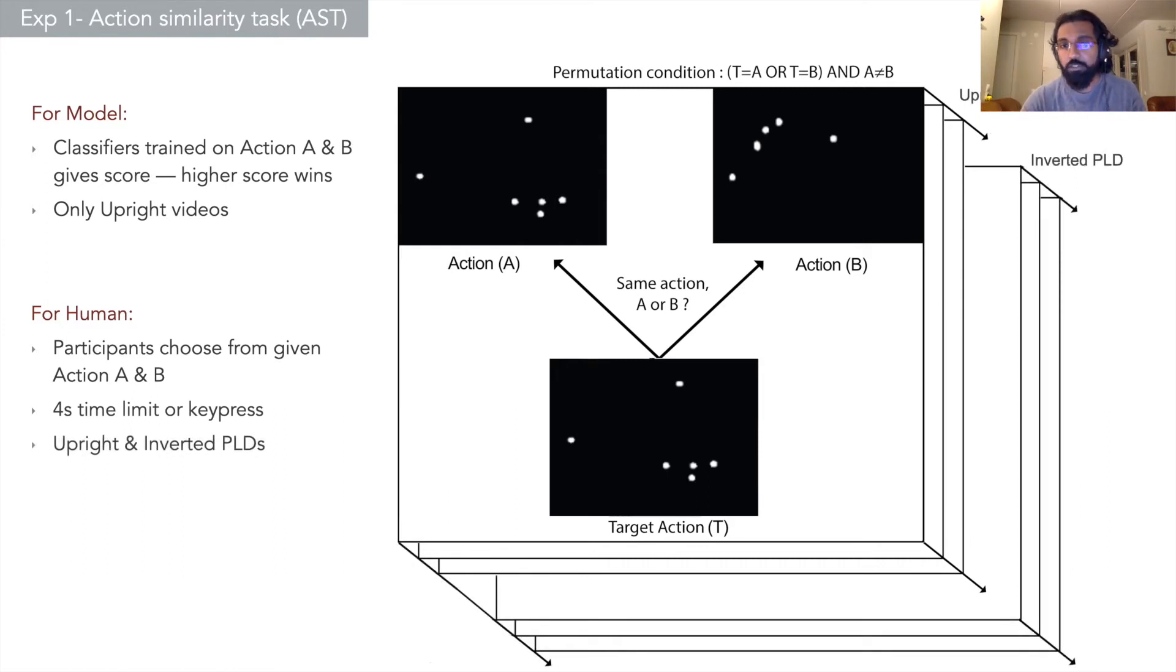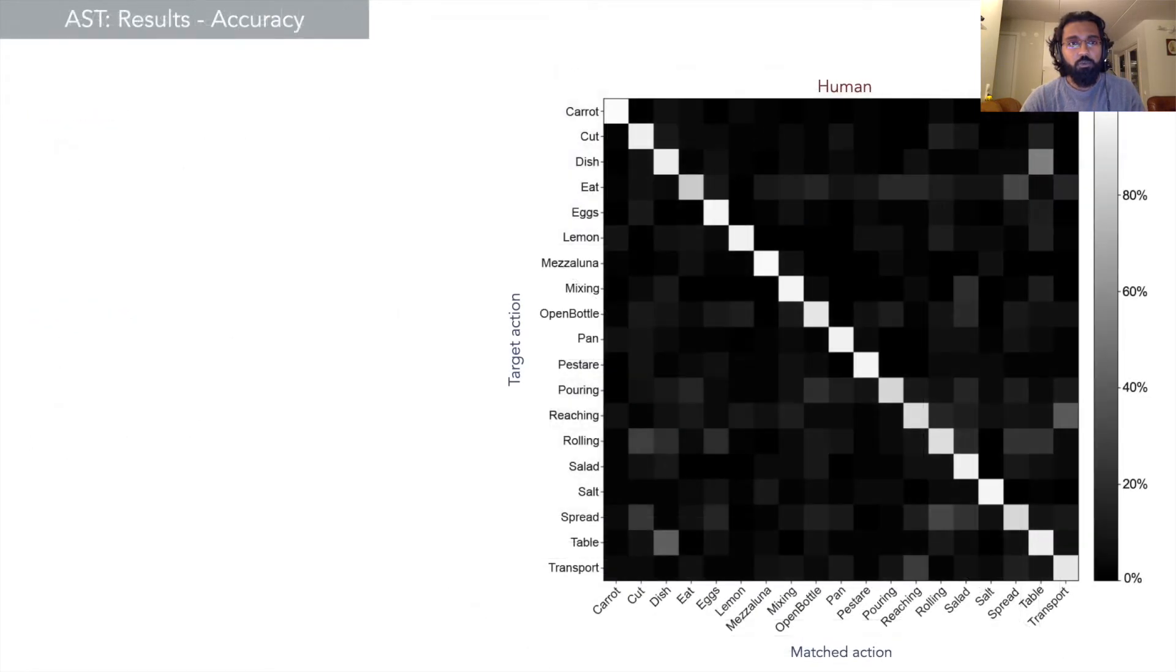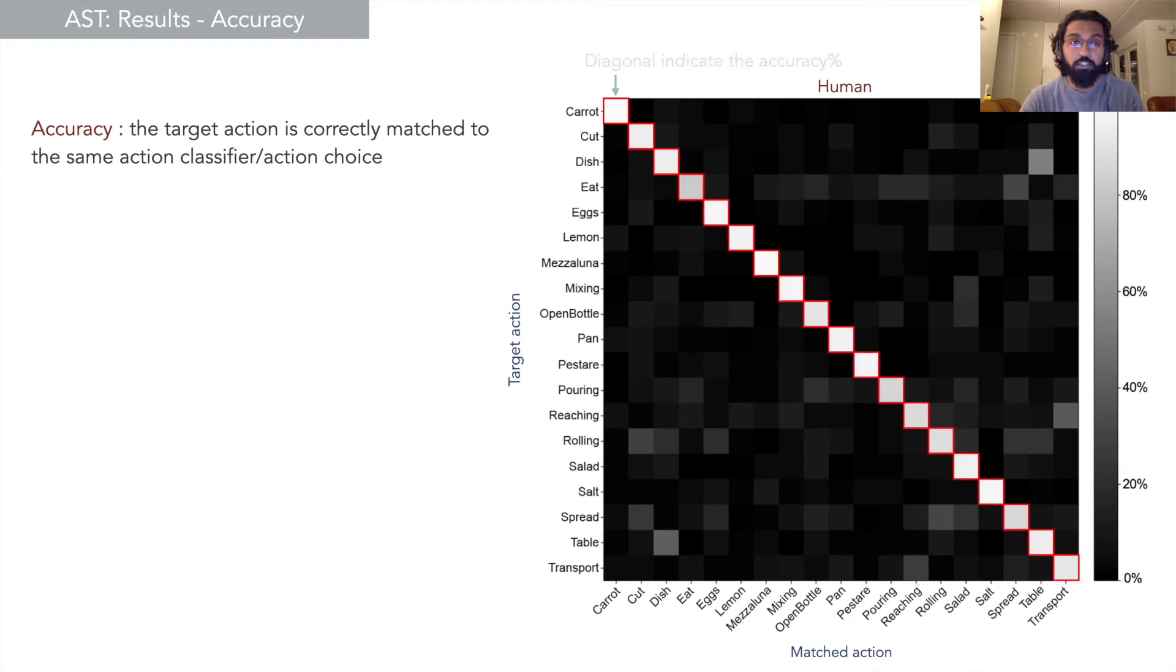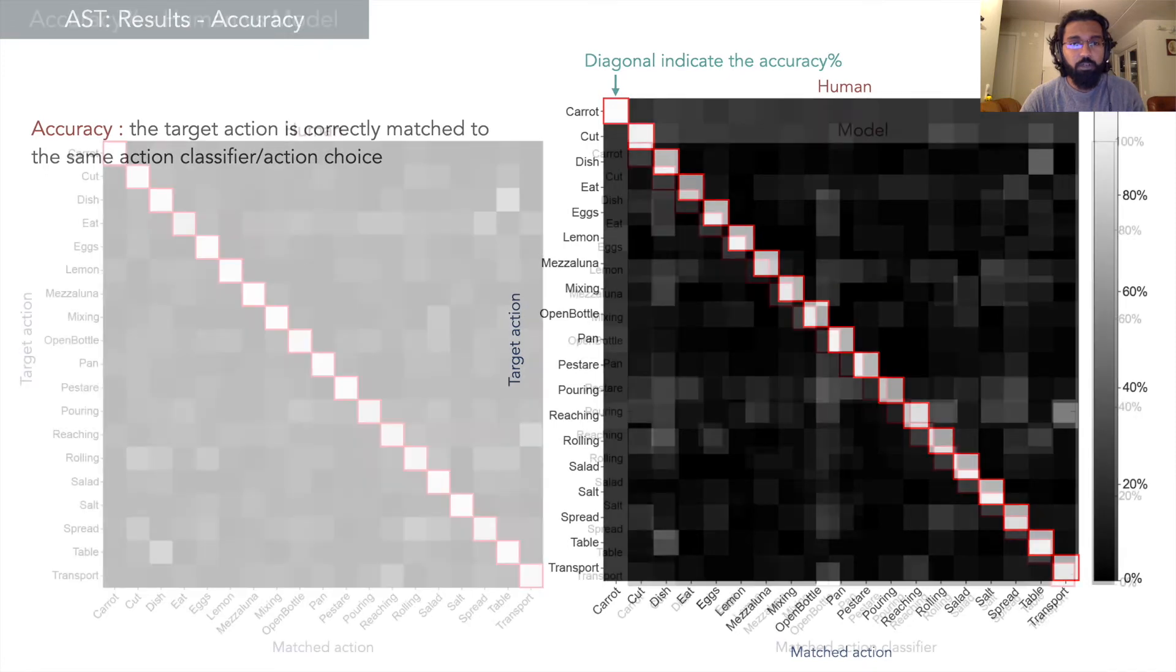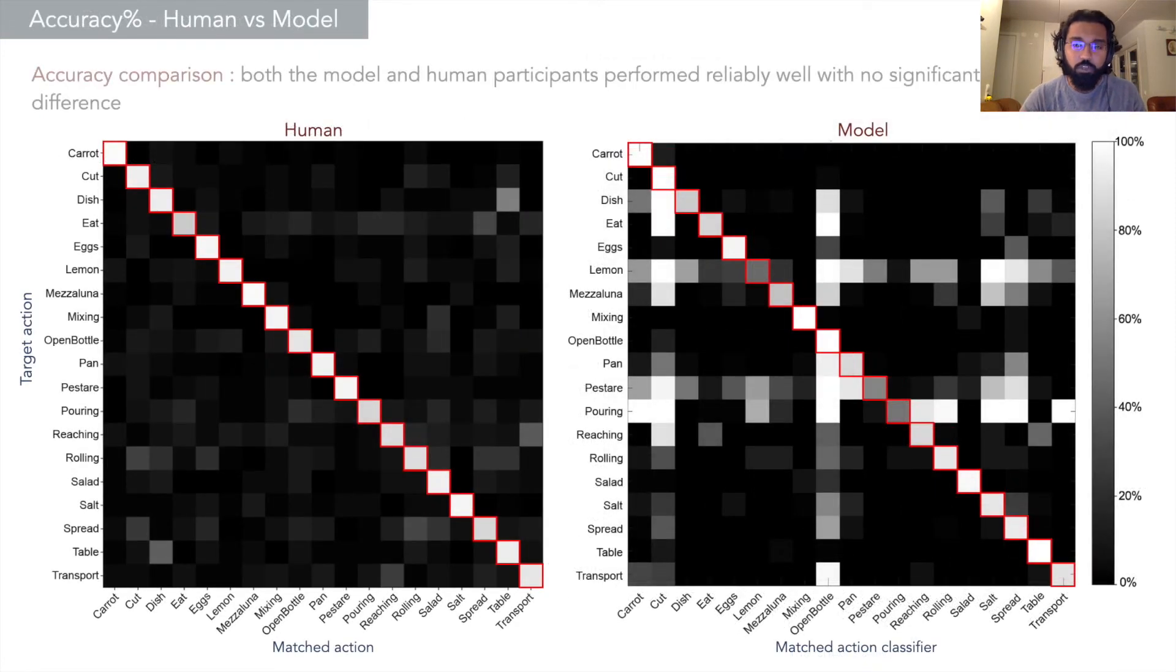Moving on to the results, results are described in the form of a matrix. On the x-axis we have the target action and on the y-axis we have the match action, which is the action classifier or action choices. The diagonals indicate the accuracy where an action is correctly matched to the classifier. If we compare the human and the model for accuracy, we see there is no difference between them and both perform reliably well.